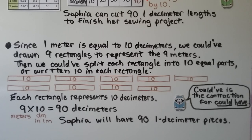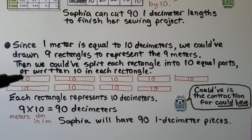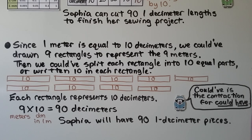Since one meter equals ten decimeters, we could draw nine rectangles to represent the nine meters, then split each rectangle into ten equal parts, or write ten in each rectangle to go quicker. Each rectangle represents ten decimeters. Nine times ten is ninety decimeters, so Sophia will have ninety one-decimeter pieces.